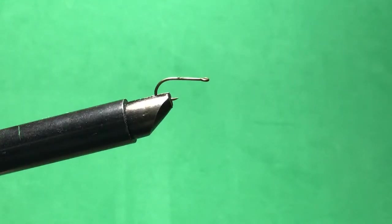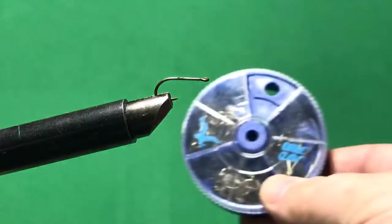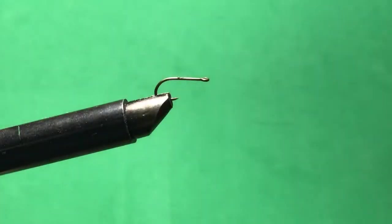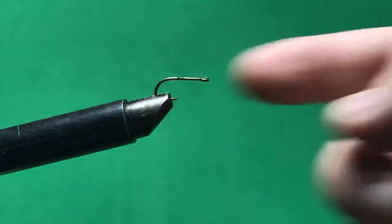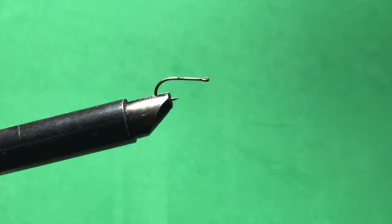So from the Eagle Claw 3-pack, I chose the smallest size. And I'm going to make, I don't even know what to call it. Some kind of a nymph something or other.